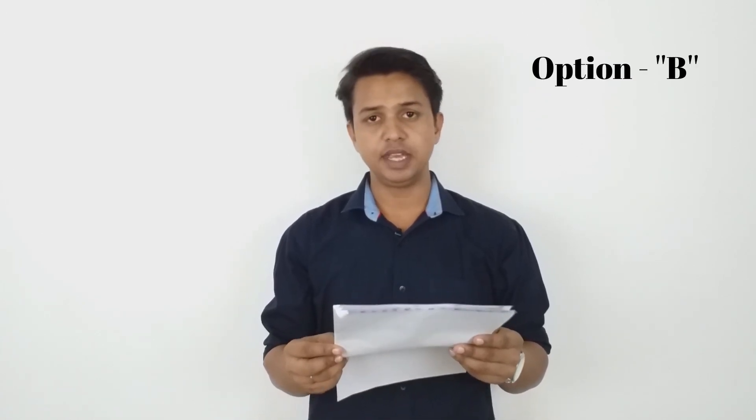Question 25: An organic compound P on heating with concentrated H₂SO₄ forms compound Q, which on addition of one molecule of hydrogen in the presence of Ni forms compound R. One mole of compound R on combustion forms two moles of CO₂ and three moles of H₂O. The correct option is option B.